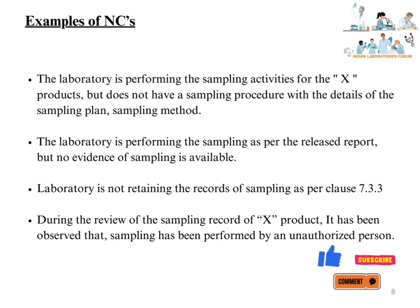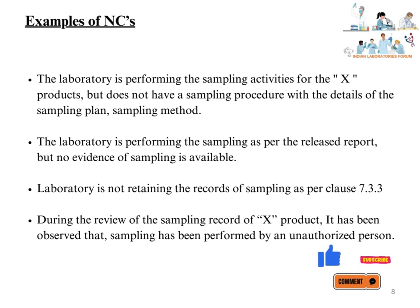Examples of non-conformances as per Clause 7.3: The laboratory is performing sampling activities for product X but does not have a sampling procedure with details of the sampling plan and sampling method. The laboratory is performing sampling as per the released report but no evidence of sampling is available. The laboratory is not retaining records of sampling as per Clause 7.3.3. During the review of the sampling record of product X, it has been observed that sampling was performed by an unauthorized person.